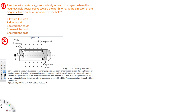The current direction is given, and we also have the direction of the magnetic field, so here we have to use the right-hand rule. When you use the right-hand rule, you align your fingers along the current's direction, and then you curl them toward the magnetic field direction — that's going to be inside. When you curl it, the thumb shows the force's direction.